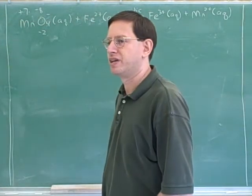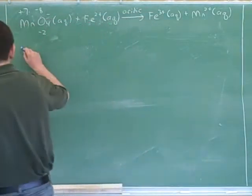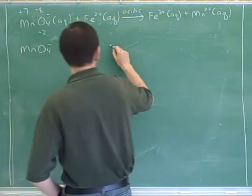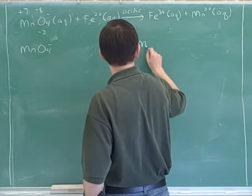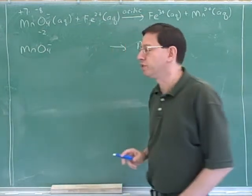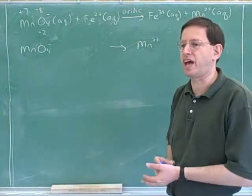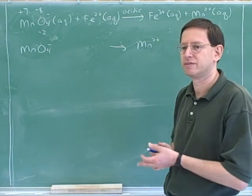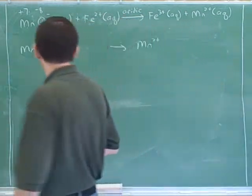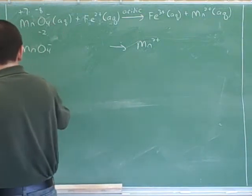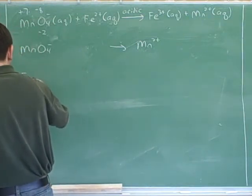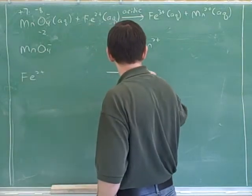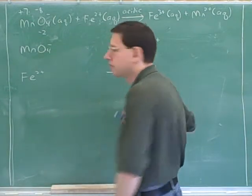Well, what would one of the half reactions be? MnO4, and on the other side will be manganese 2+. Is that what I have water there? That's right. We'll do that in a second, but that's right. This is the basic half reaction. It looks like one of the half reactions here refers to the manganese. And what's the other half reaction? Iron, Fe2+, and iron 3+. Good.